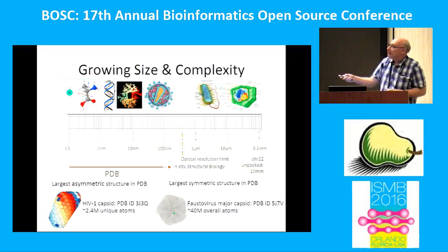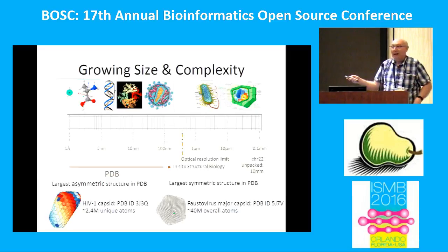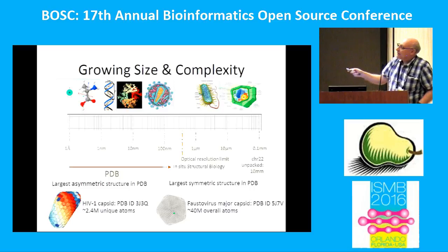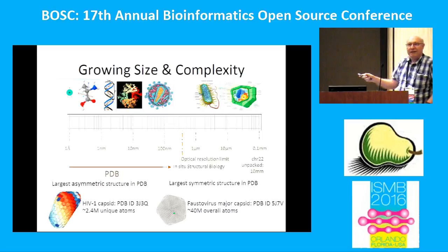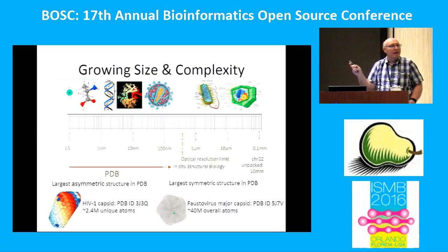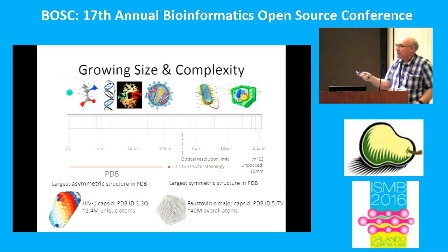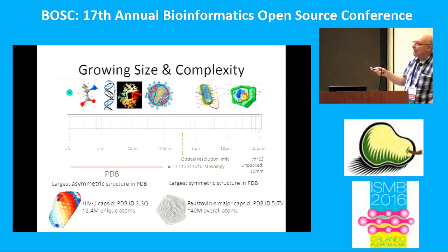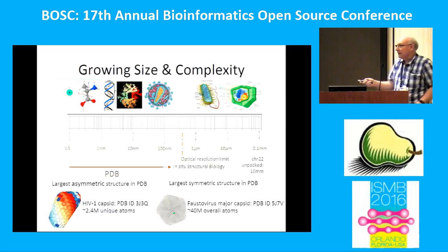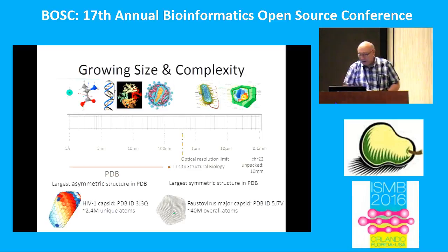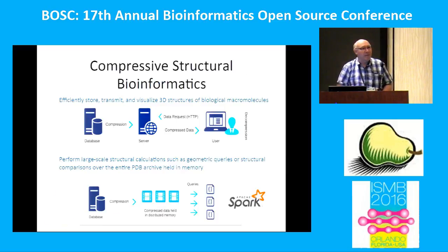As shown here on the scale, going from a small protein or DNA all the way to a eukaryotic cell, right now the largest proteins we have include parts of the HIV virus. Very soon we get into a range where you can actually see those molecules on a light microscope — hundreds of millions or billions of atoms. Currently the largest structure in the PDB is the HIV capsid, with 2.4 million atoms. The largest symmetric molecule is the Foster virus with 40 million atoms.